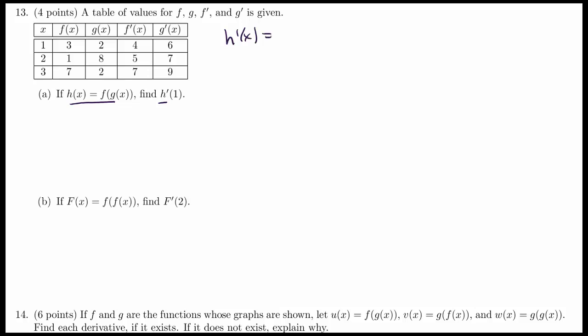So H prime is equal to F prime of G of X multiplied by G prime of X, using the chain rule. So what is H prime of 1?